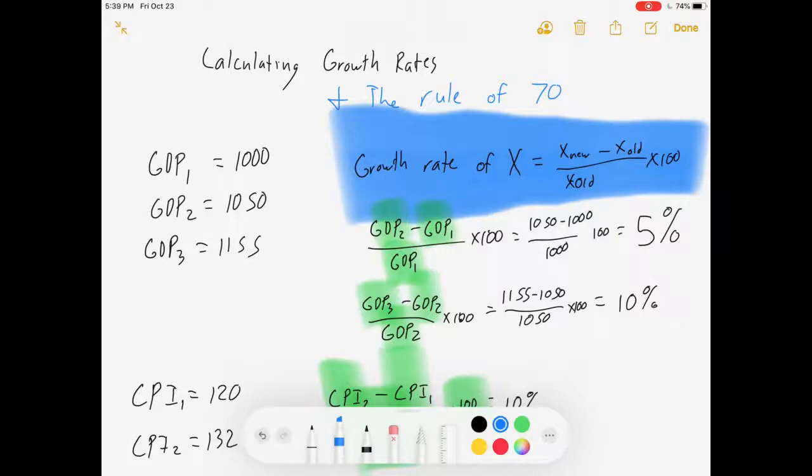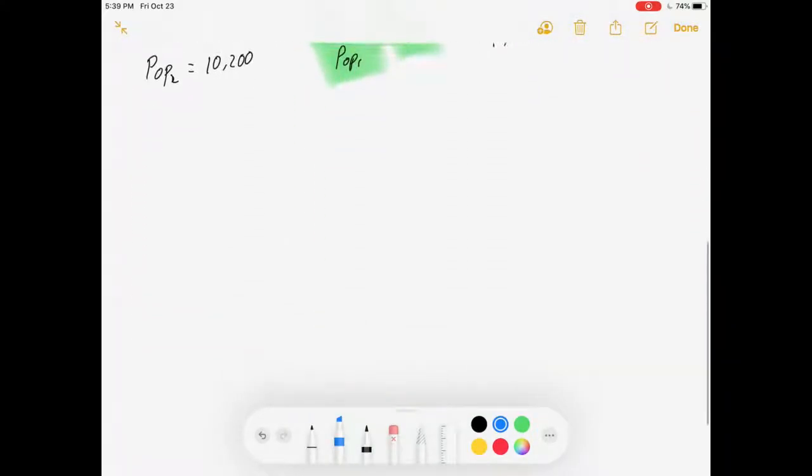Okay, now let's pivot a little bit. Let's talk about the rule of 70. The rule of 70 is just a little rule of thumb to help us get some approximations of how important a growth rate is. And here's what it is.